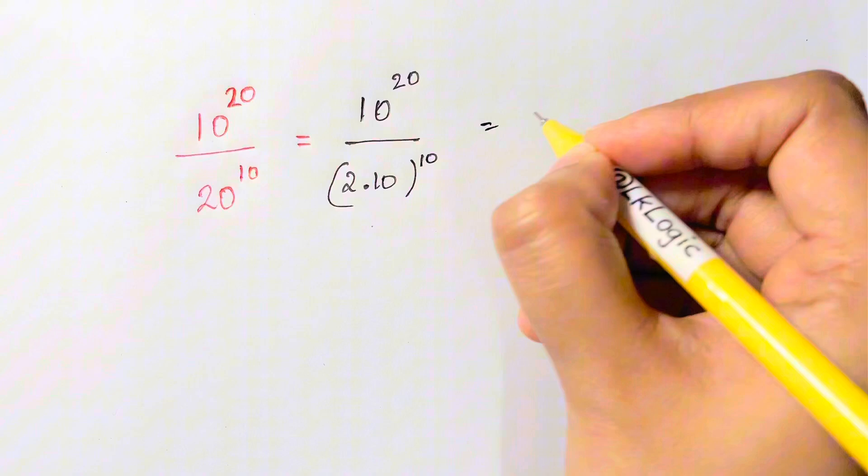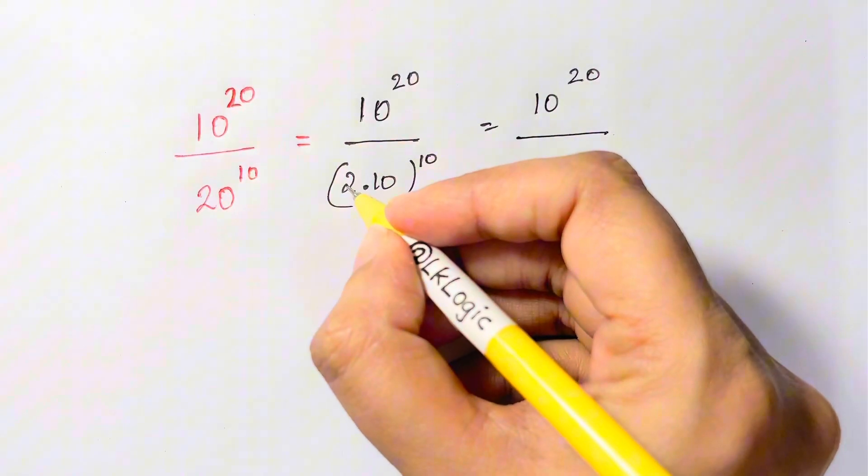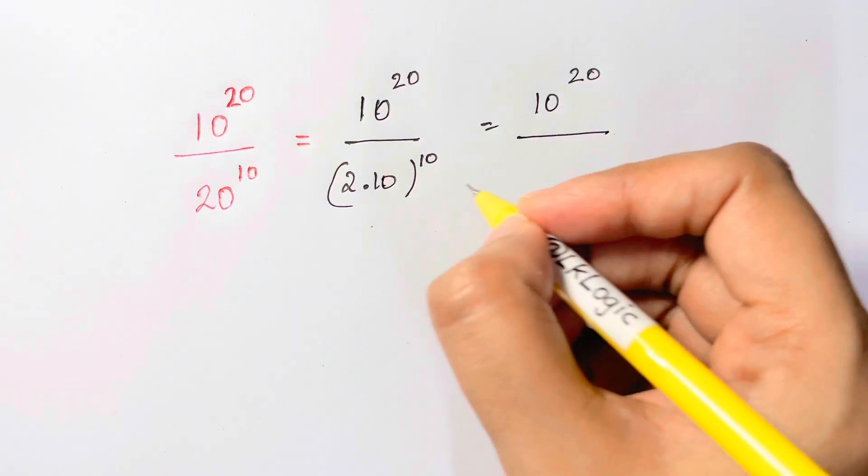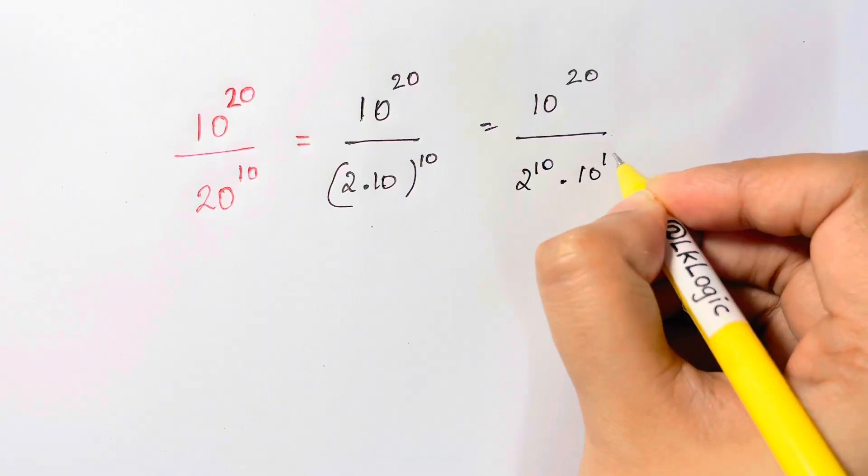Now let's see, we have 10 to the power of 20 over, now you have product to a power, so each product will be raised to this power, 2 to the power of 10 times 10 to the power of 10.